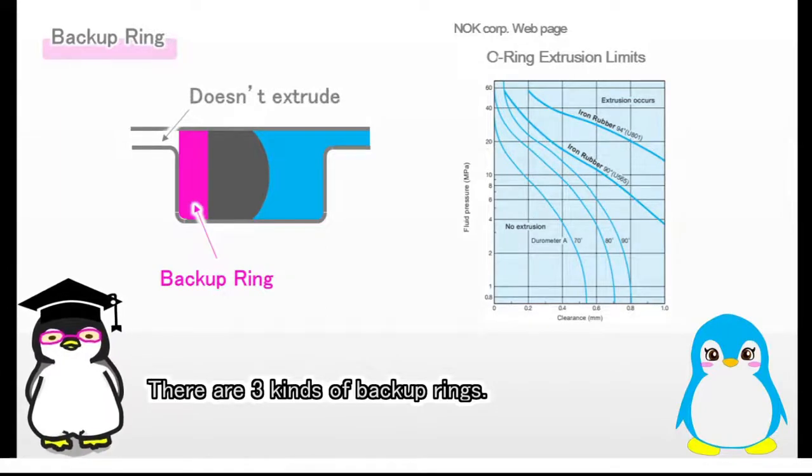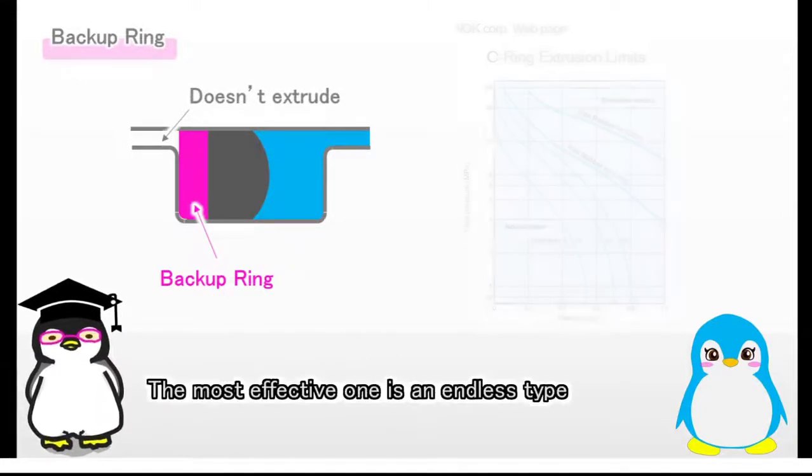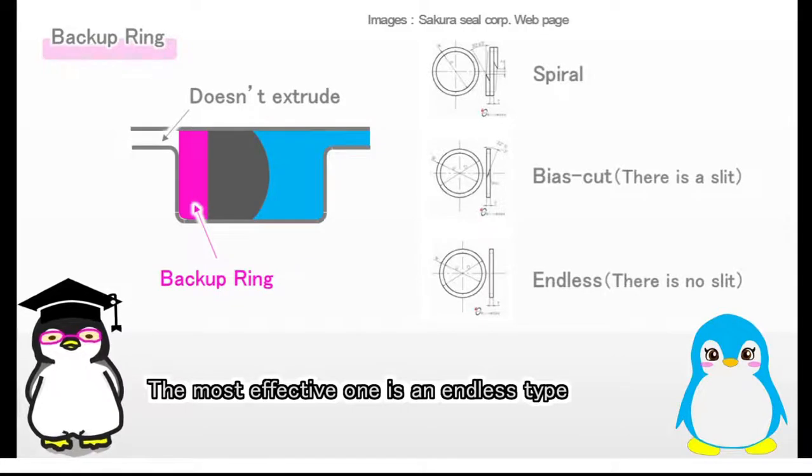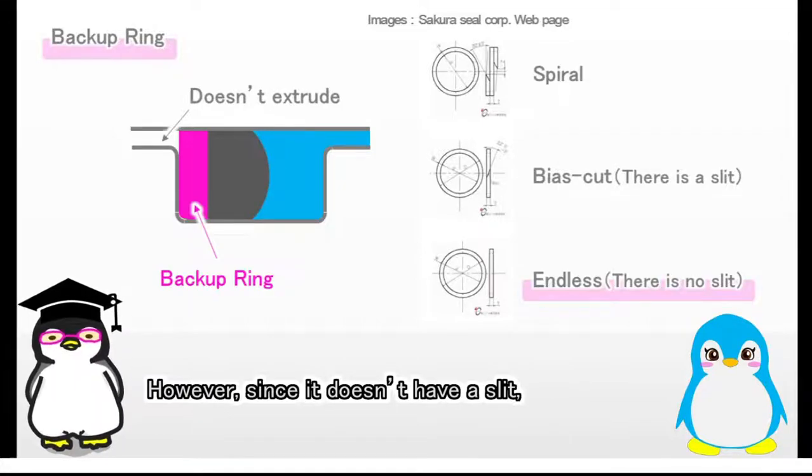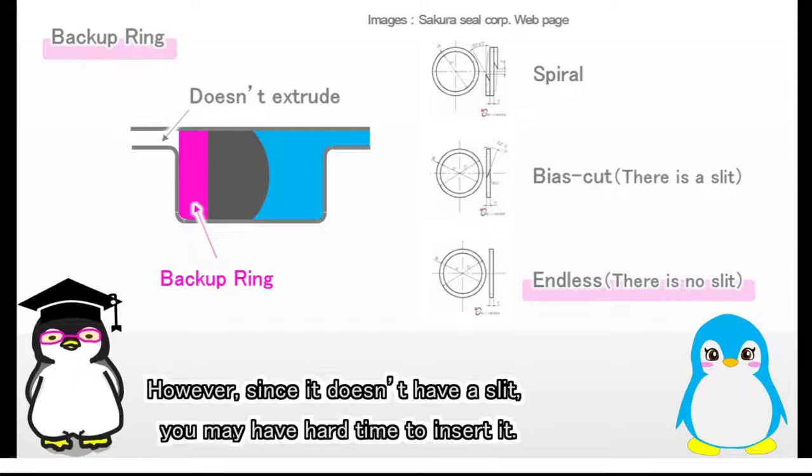There are three kinds of backup rings. The most effective one is an endless type, because it doesn't have a slit. However, since it doesn't have a slit, you may have hard time to insert it.